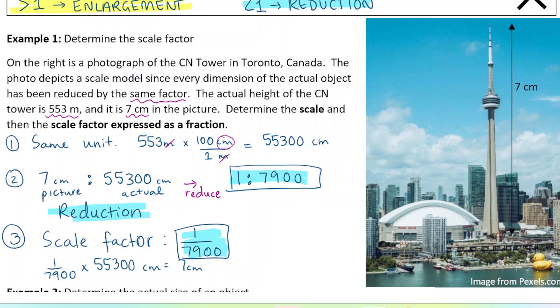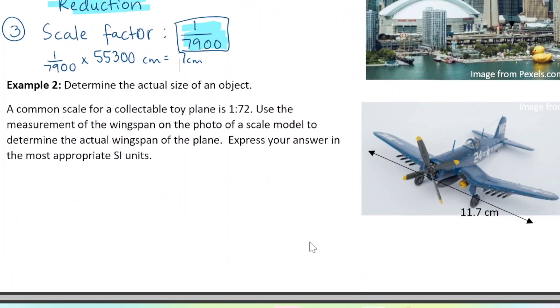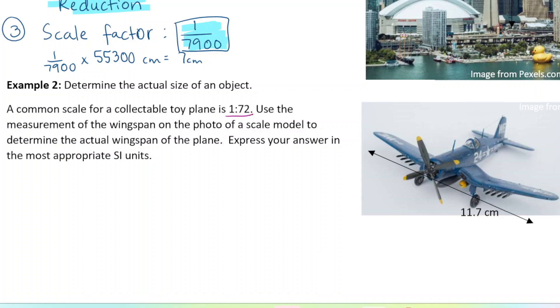Let's look at the next example. So this time we have a common scale for a collectible toy plane that is one to 72. Use the measurement of the wingspan in the photo to get the actual wingspan of the plane. Express your answer in the most appropriate SI units. So one to 72 - remember the first number is the drawing, and the second number is the original or the actual size.